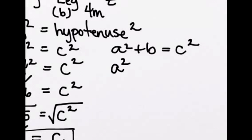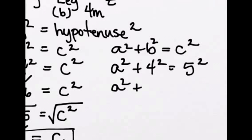We don't know A, so we'd write A squared plus four squared equals five squared. And we simplify and get A squared plus 16 equals 25.